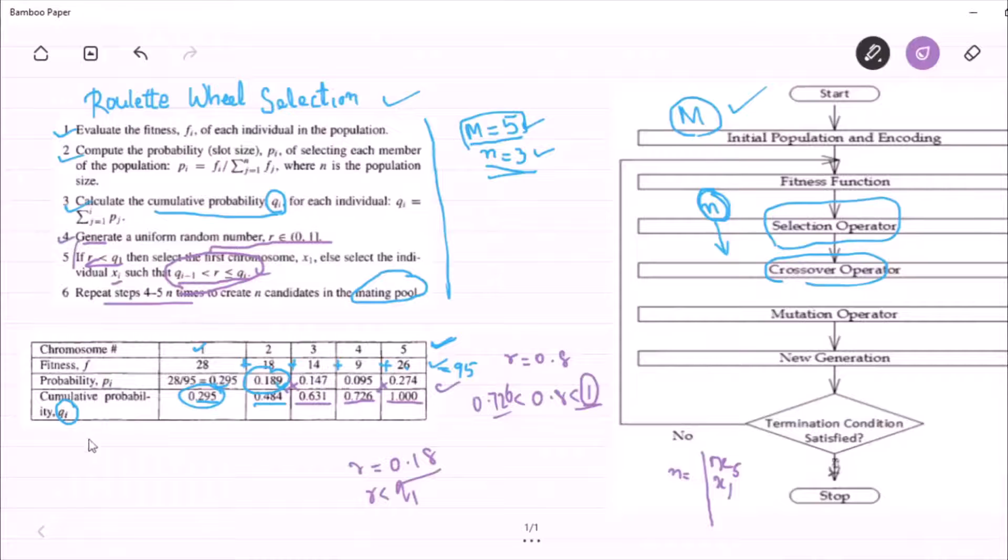One more to be selected. So again, go to step 4 and randomly generate one number. Let's say that number is 0.5 and we found that 0.5 lies between the cumulative probability 0.484 and 0.631.